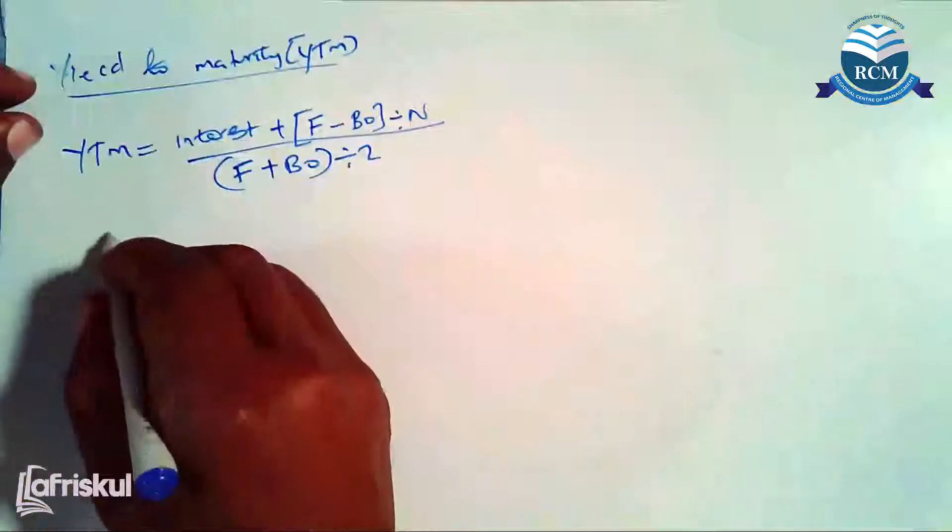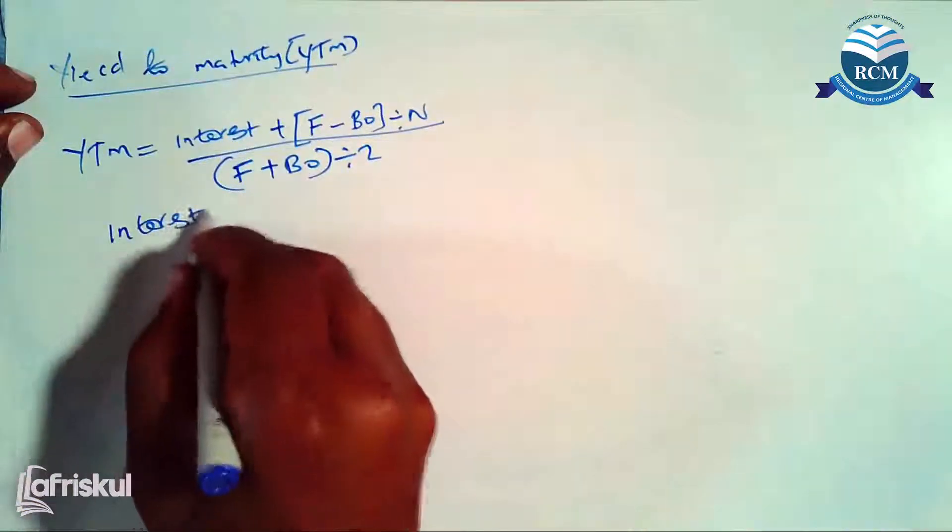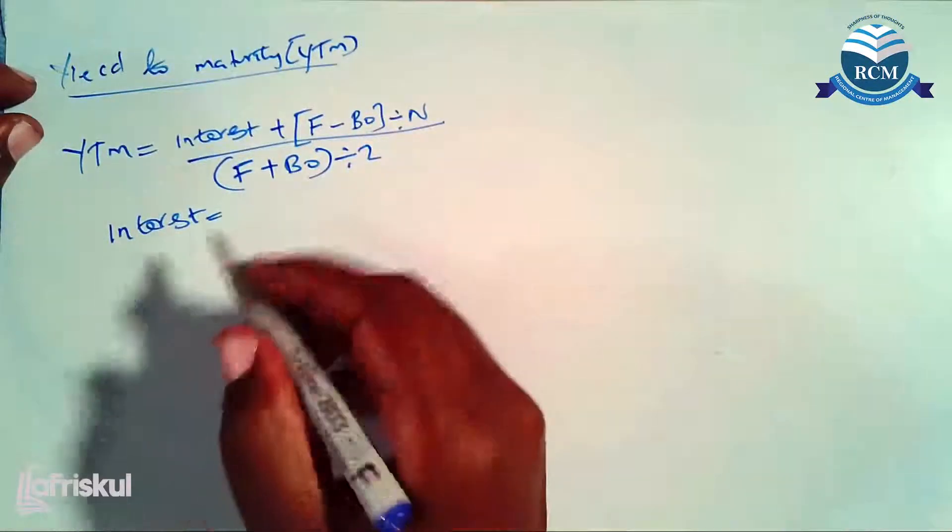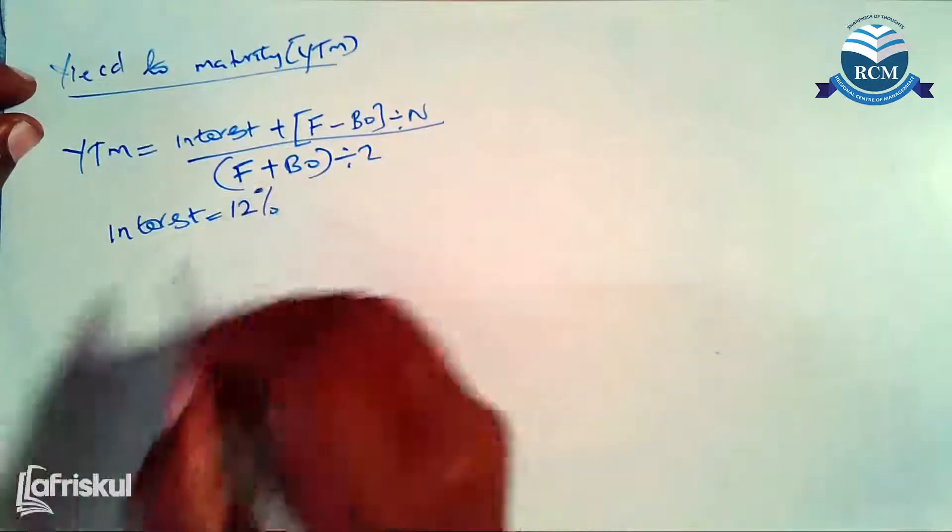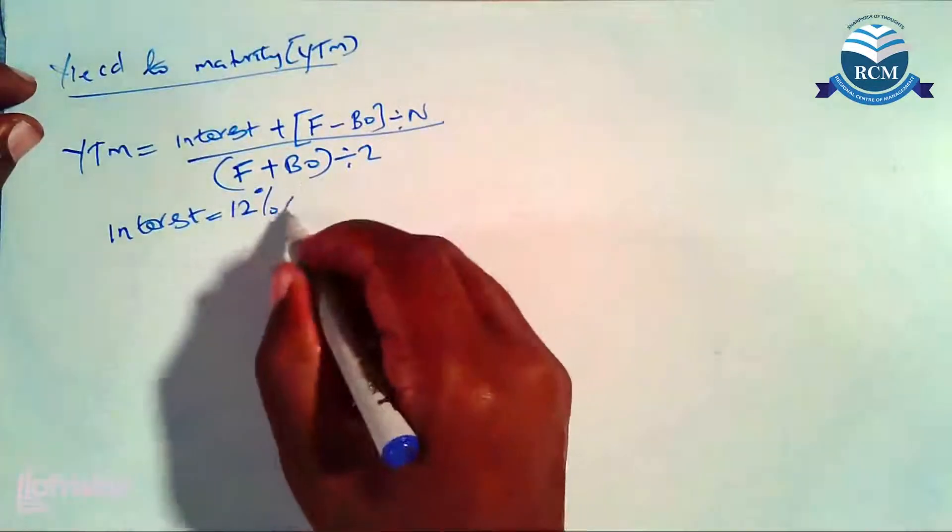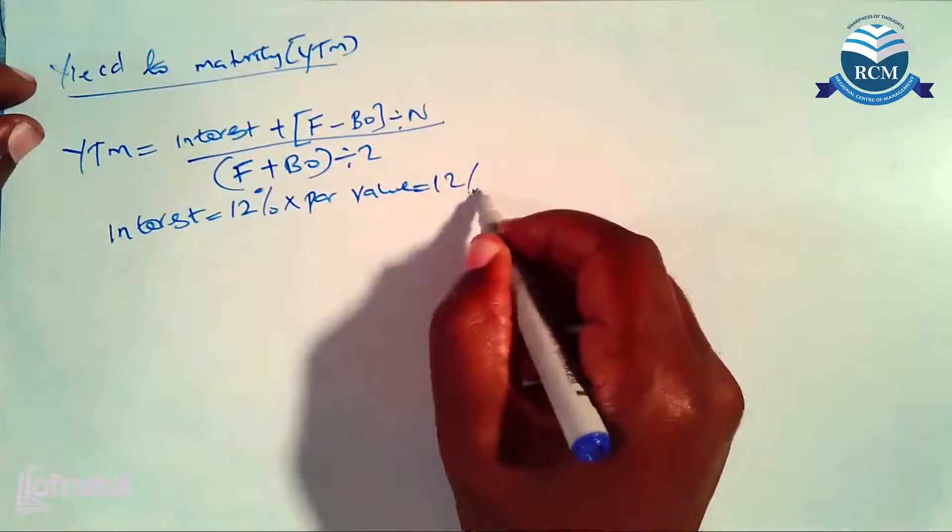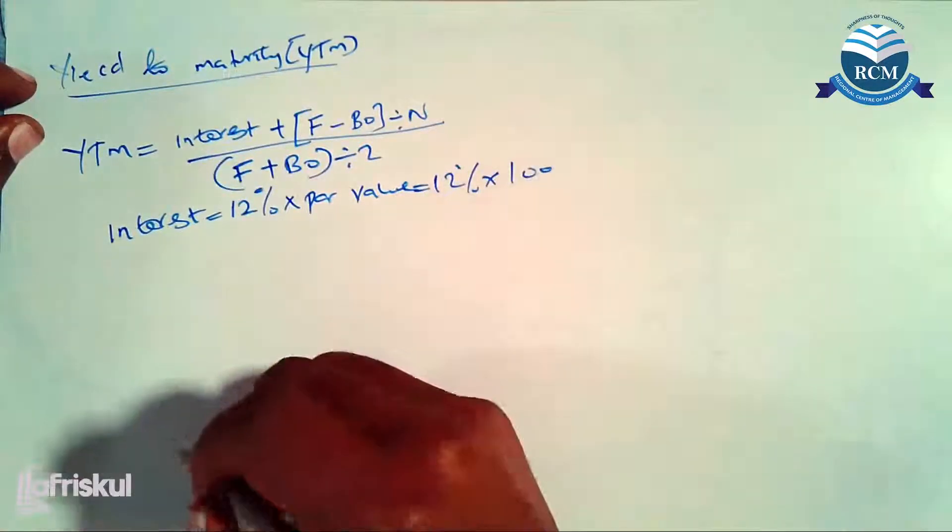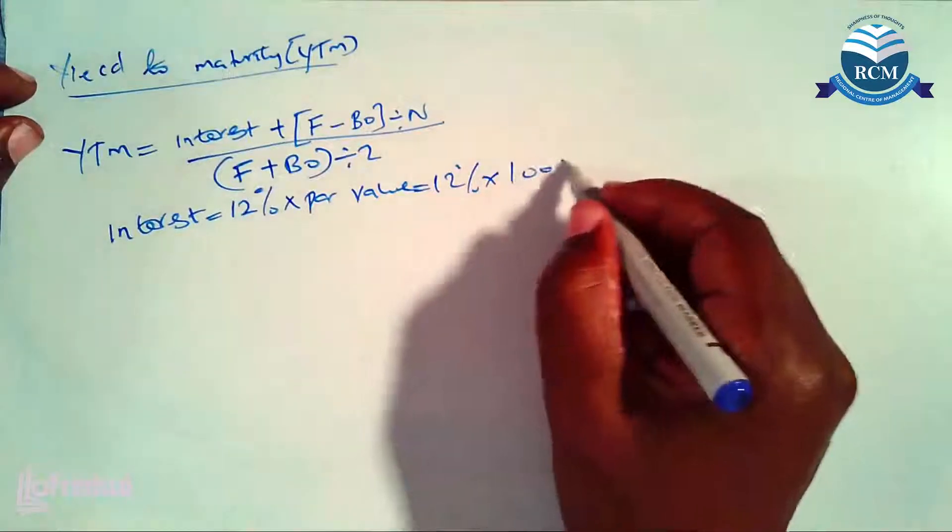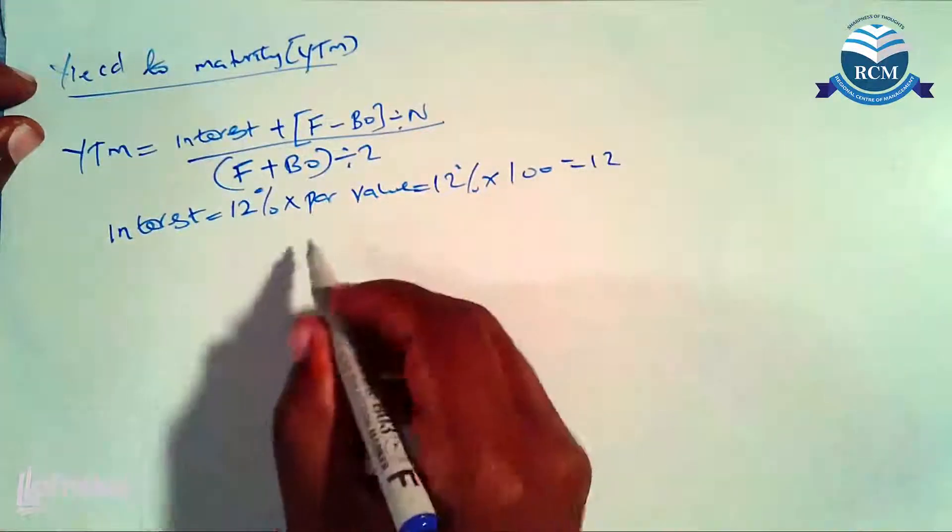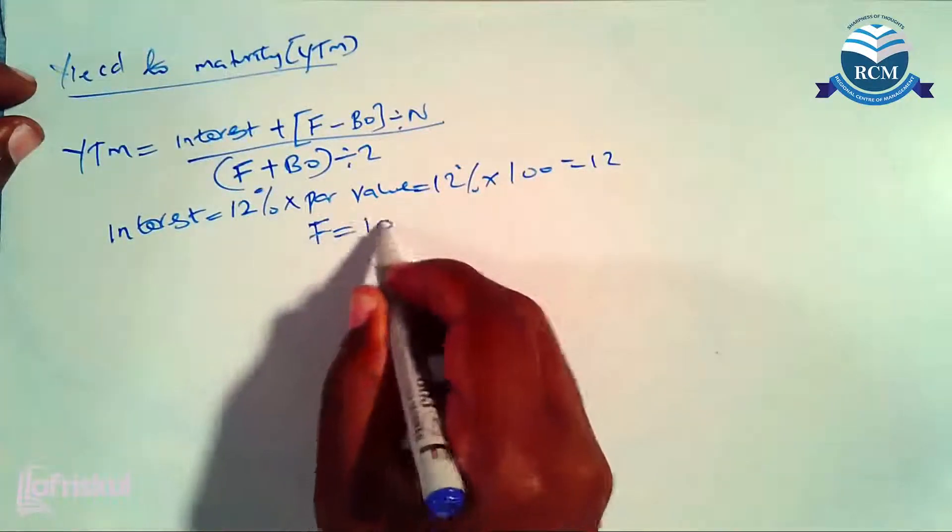So we have first of all the interest. Remember, interest will give you the coupon interest rate which is 12 percent of the par value, which is 12 percent of our par value, that is 100, which gives us 12. The par value face value is 100.